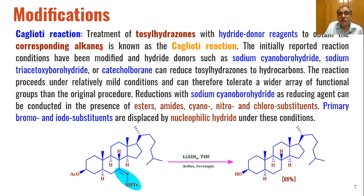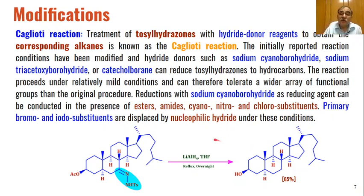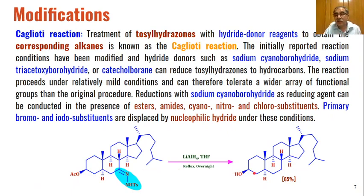In the Kaganowy reaction, pre-formed tosyl hydrazines are treated with reducing agents like lithium aluminium hydride in THF by refluxing overnight, converting them into methylene compounds. Since lithium aluminium hydride also reduces ester functional groups, esters are also reduced to alcohols, giving product in 65% yield. If sodium cyanoborohydride is used instead of lithium aluminium hydride, ester, amide, cyano, nitro, or chloro substituents are not affected, so the ester group is preserved.